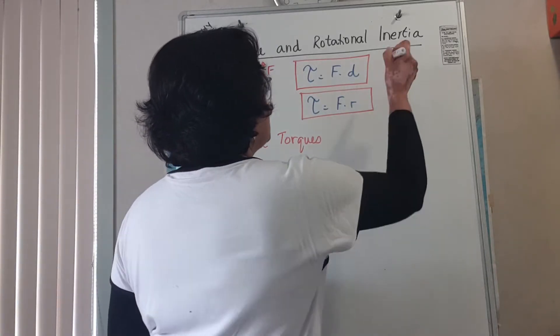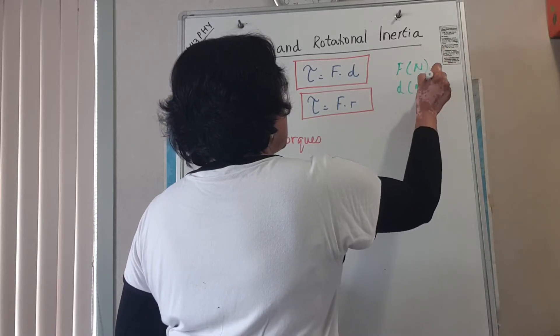So the formula could either be torque is force times distance, or torque is force times radius. It could be R, it could be D, it means the same thing. Now just looking at the units in which these quantities are measured. Force is measured in newtons, distance is measured in meters, so torque is measured in newton meters.